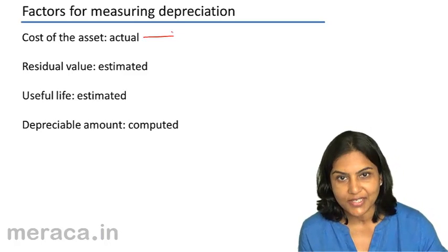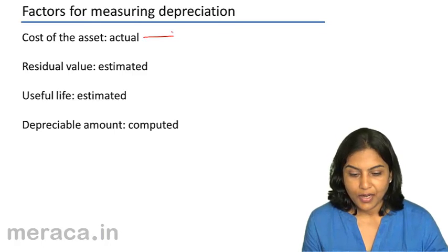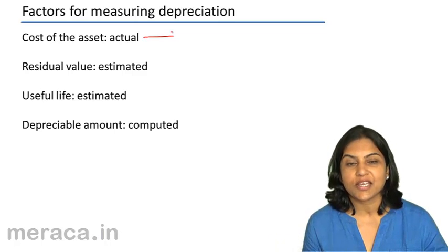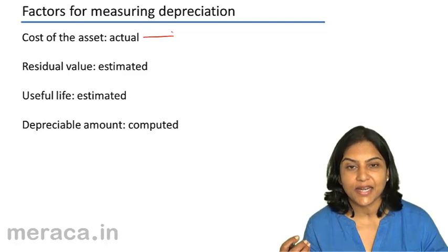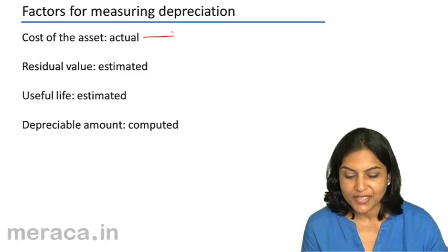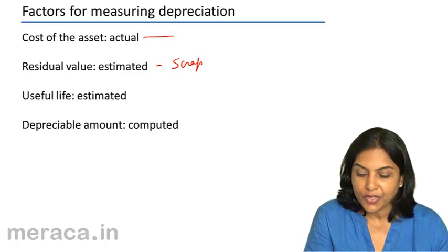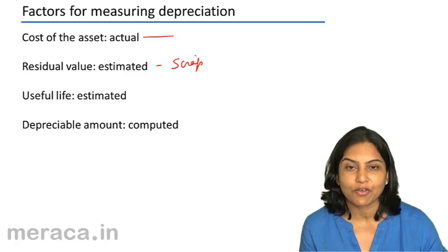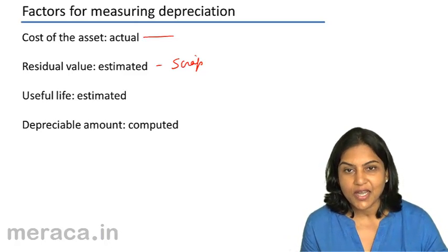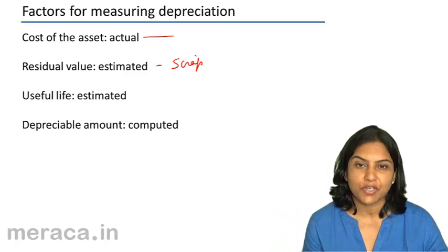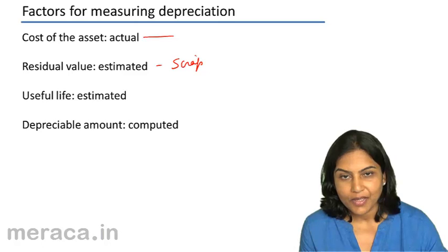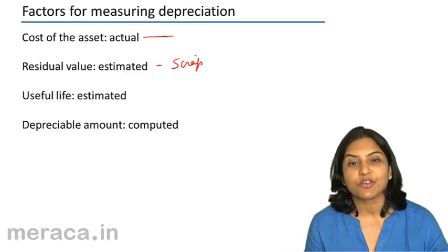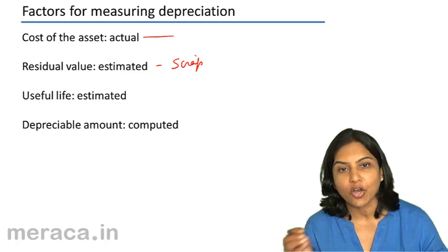The other factor is what is called the residual value. The residual value is the value I expect to get by selling the machine after using it during its lifetime — it is in a way the scrap value. For example, if I purchase a machinery with a life of 5 years and the machine is purchased for 1 lakh rupees, at the end of 5 years I might be able to get 5,000 rupees for it if I sell it as scrap. This 5,000 — this scrap value — is the residual value, the value at the end of the economic life of the asset.